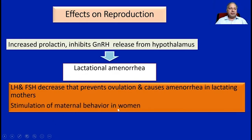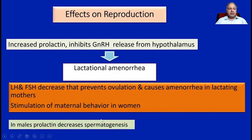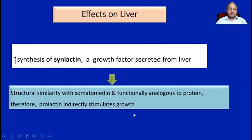There is also stimulation of maternal behavior in women. In males, prolactin has a mild effect of causing a decrease in spermatogenesis. Regarding effects on the liver, it causes increased synthesis of a growth factor called synlactin from the liver. Synlactin has structural similarity to somatomedins and is also functionally analogous to them. Therefore, prolactin indirectly causes stimulation of growth.